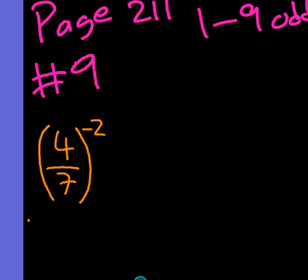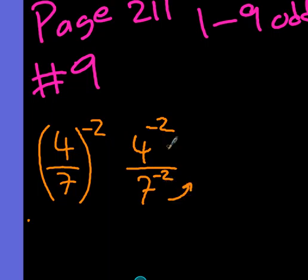Finally, number nine. That becomes four to the negative two over seven to the negative two. If I use my rules for exponents, a negative exponent means the seven is going to go up to the top, the four is going to go down to the bottom because they have negative exponents.